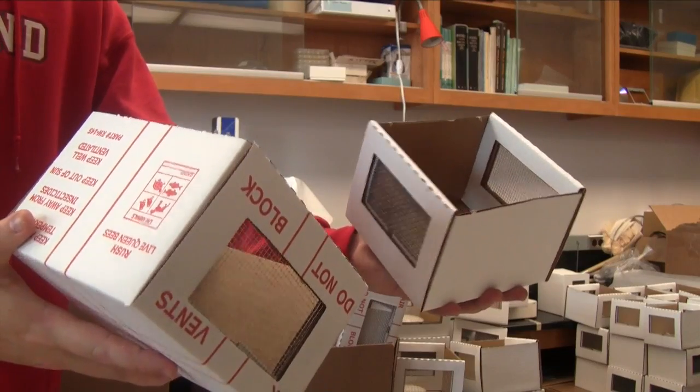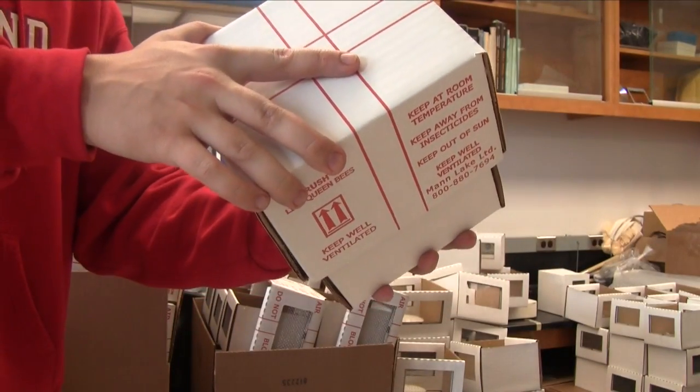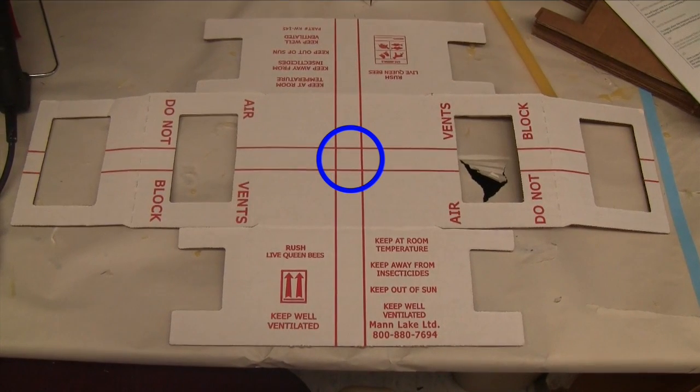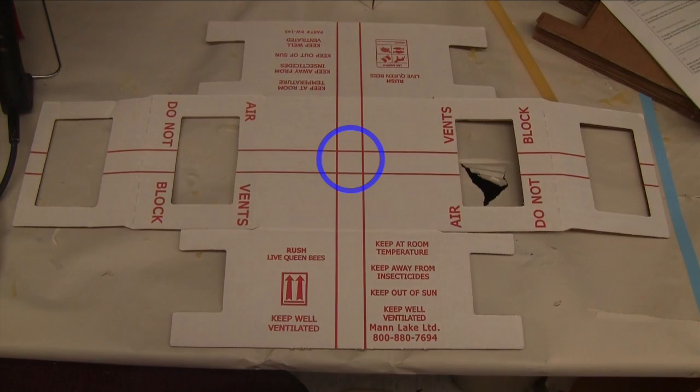With that, you have completed the construction of a live bee shipping box and only one final step remains. Lastly, you will want to pre-cut the outlined area on top of the box so that you can insert a funnel for the live bees.